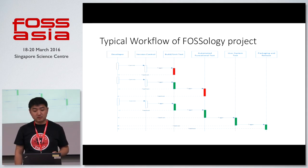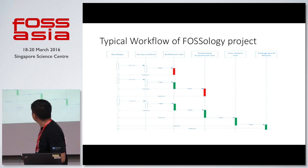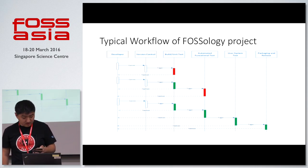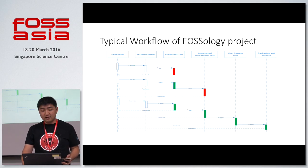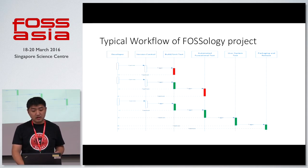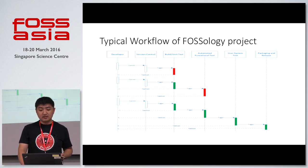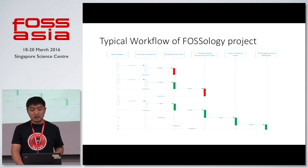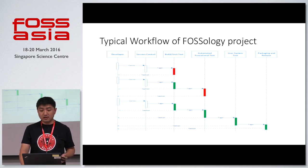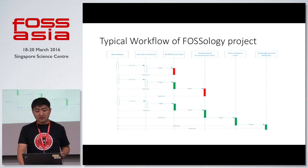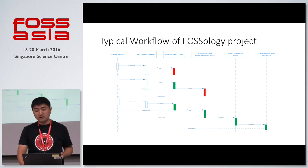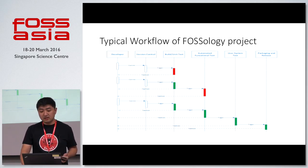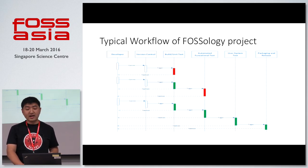First, I will quickly introduce the typical workflow for the Facility project. In this workflow, when a developer submits changes to the version control system, it will trigger the build and unit test. If it passes, it will trigger the automation functional test. If it fails, it will get back to the developer to fix it as soon as possible. After the functional test passes, it will trigger the delivery system for manual test and system test. After that, it triggers the packaging and releasing.